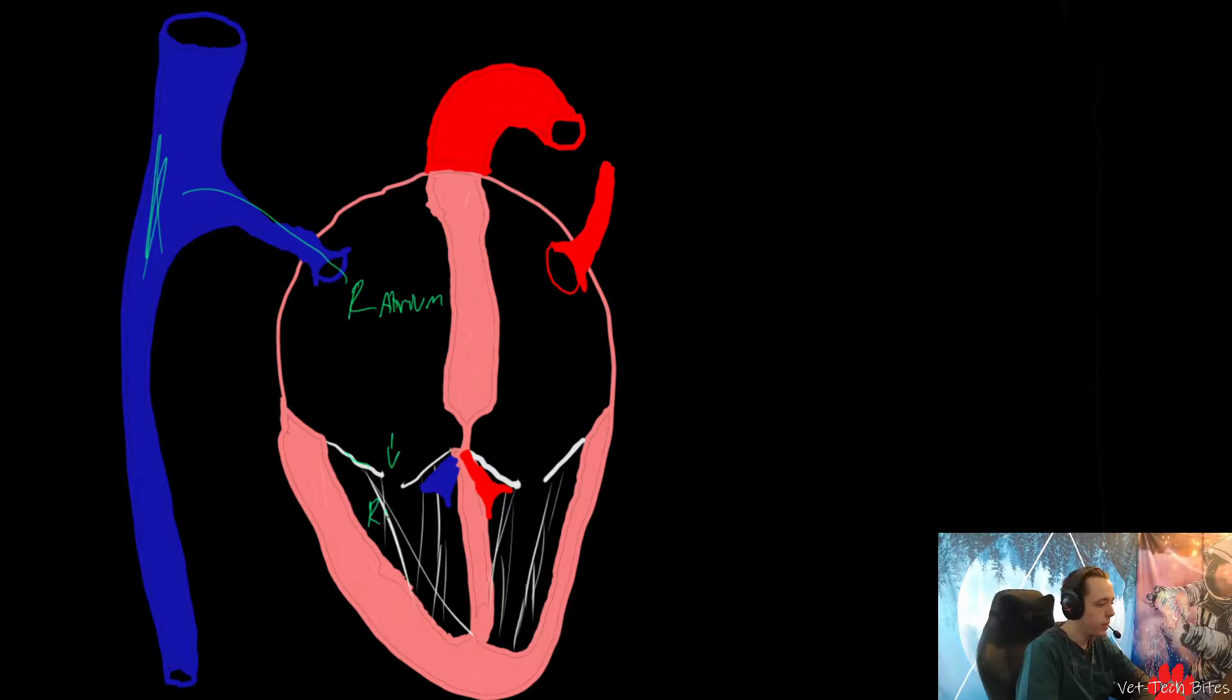Then it goes in our pulmonary artery this way out to our lungs and then back to our heart via the pulmonary vein, right here into our left atrium. Then it goes down through the bicuspid or mitral valve into our left ventricle where it goes out to the aorta into systemic circulation.